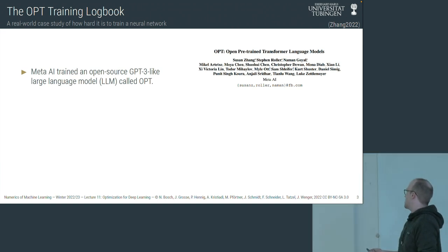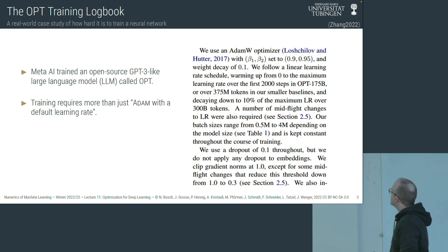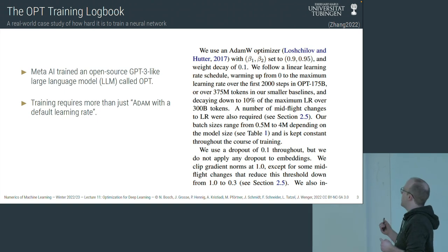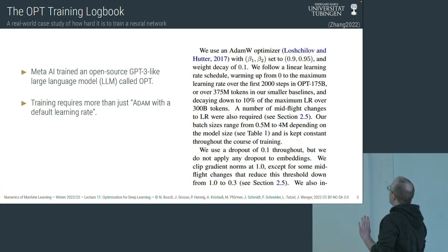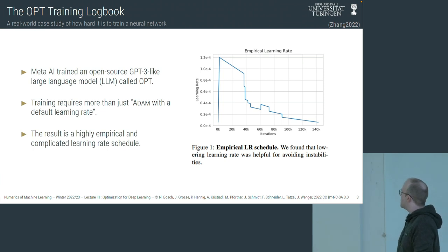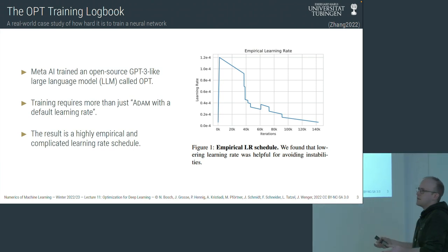In their paper, we can look at the section on training methodology describing the recipe needed to train this large language model. It starts: 'We use an AdamW optimizer' — so already not plain Adam. They set beta1 and beta2 to 0.9 and 0.95 — non-default values. They also describe weight decay. They follow a linear learning rate schedule warming up from zero to the maximum, and crucially: 'a number of mid-flight changes to the learning rate were also required,' with a very complex schedule plot.